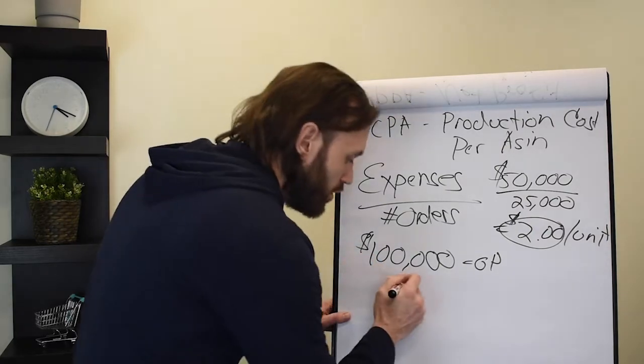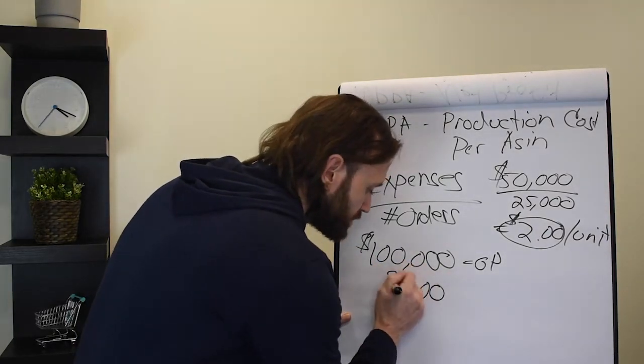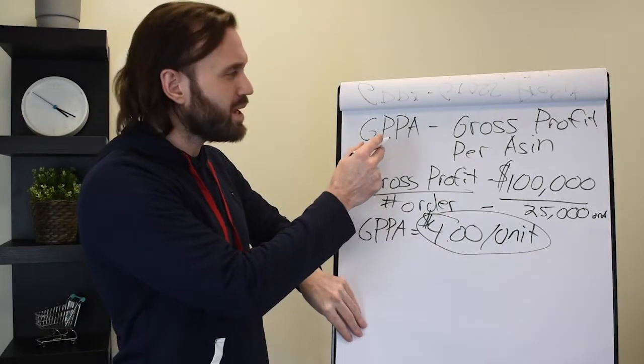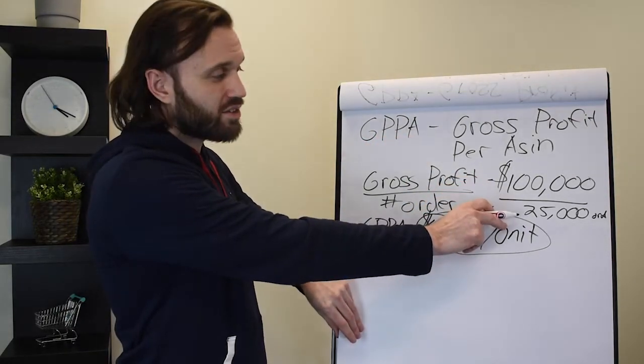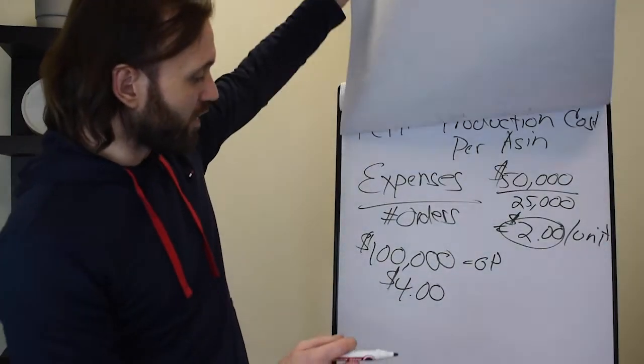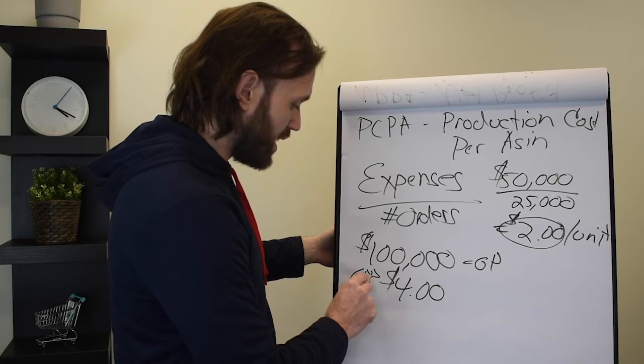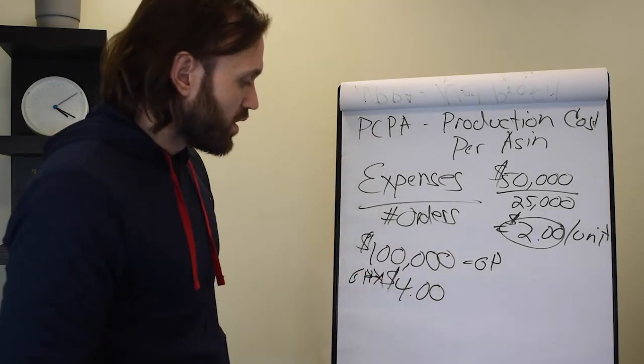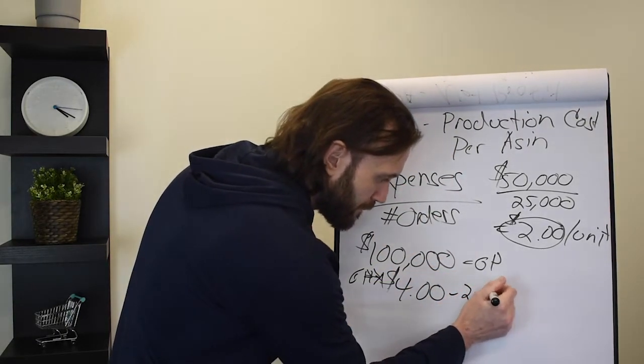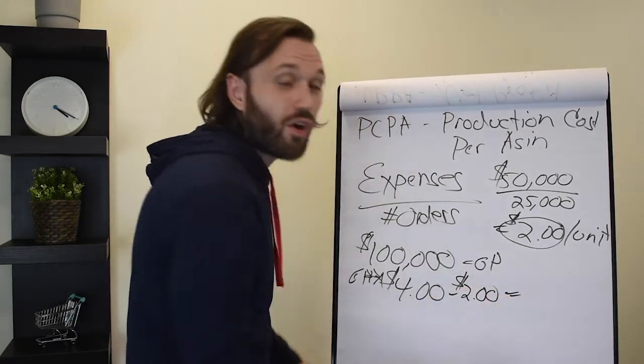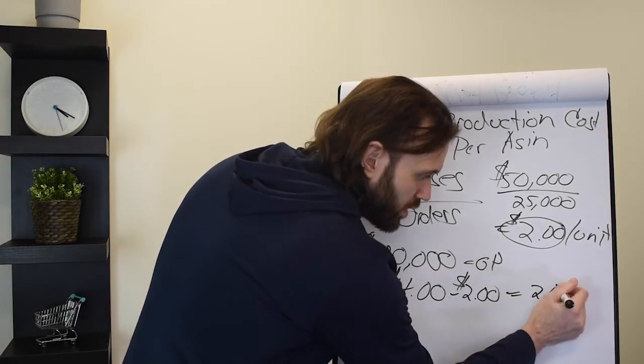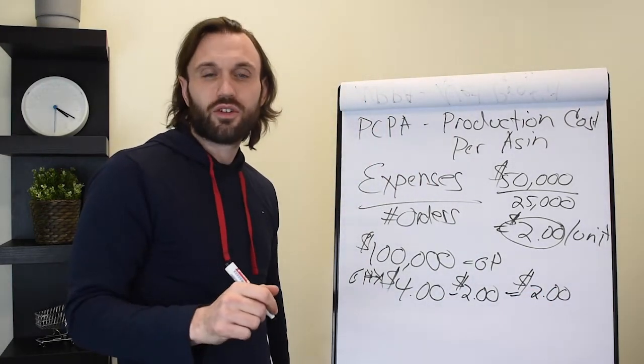So it costs us or costs you $2 a unit just to get the product out the door. Just to produce that product costs you $2 a unit. Got to know this information. So now if we take our original $4, which we pulled from right here, $4 per unit from our GPPA or gross profit per ASIN was $4 a unit, $100,000 in gross profits divided by the orders in 30 days, 25,000 orders. If we take that $4 per unit in GPPA, and now we would subtract our PCPA, which is our production cost per ASIN, and we are left with in net profits on average per sale, $2 every time we sell a product.